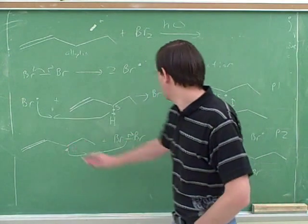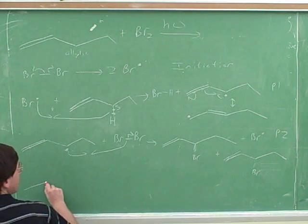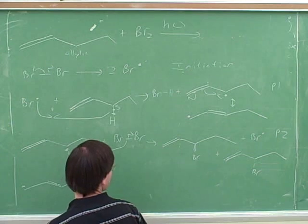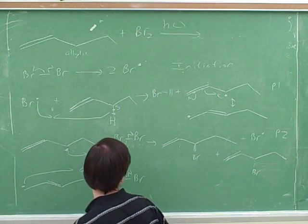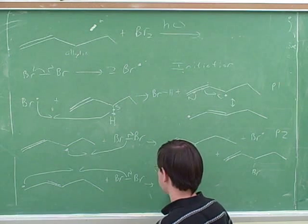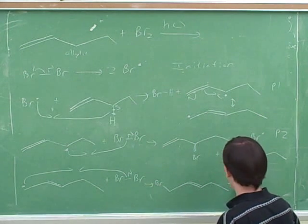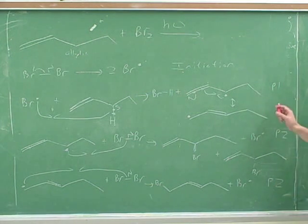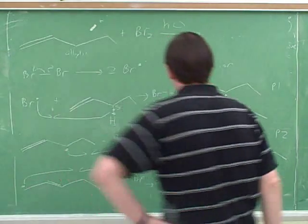However, instead of the bromines attacking this resonance structure, they could have attacked this resonance structure. Can we draw that? Yeah, let's draw that. What's the name of this step? It's also propagation. Yeah, this is just an alternative propagation step. We've seen that there can be alternative propagation steps depending on what isomers or what resonance structures are involved. But there's no stereocenter. Yeah, that's right. So how many products did we get here? Just one. Okay, good.